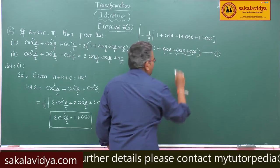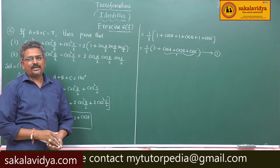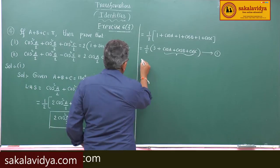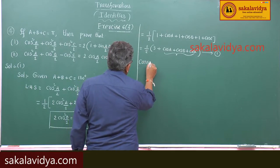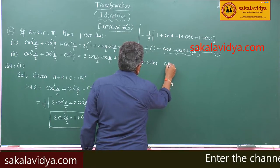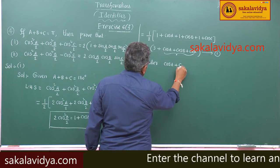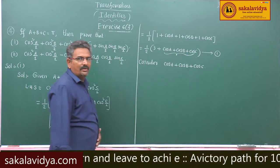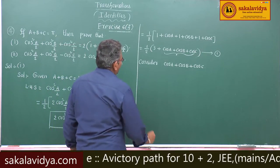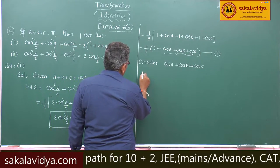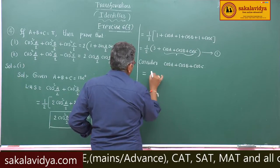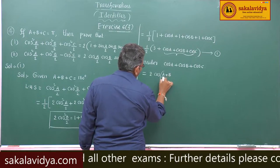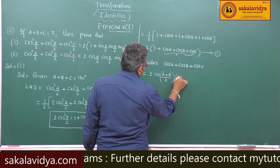Now let us separately find the value of cos a plus cos b plus cos c. Consider cos a plus cos b plus cos c. Using the sum-to-product formula, cos a plus cos b is equal to 2 cos of a plus b by 2 times cos of a minus b by 2.